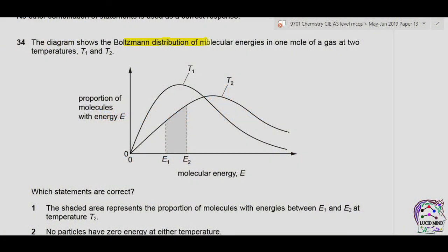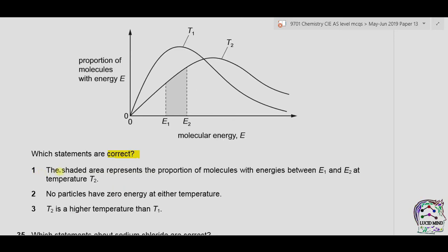The diagram shows the Boltzmann distribution of molecular energies in one mole of a gas at two temperatures T1 and T2. Statement 1: the shaded area represents the proportion of molecules with energies between E1 and E2 at temperature T2 — this is true. Statement 2: no particles have zero energy at either temperature — true, because gas particles always have kinetic energy. Statement 3: T2 is a higher temperature than T1 — true, as at T2 more molecules have higher molecular energy. Since all three statements are correct, the answer is A.